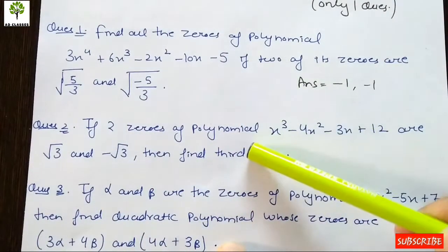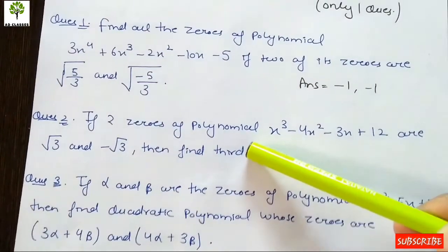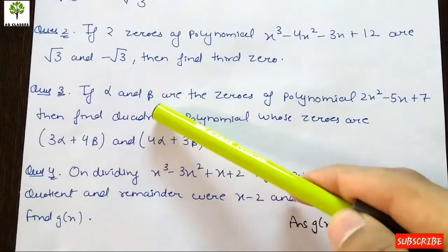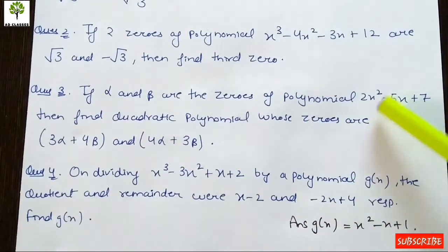We have to solve the same type of question. Question 3: If α and β are the zeros of polynomial 2x² - 5x + 7...